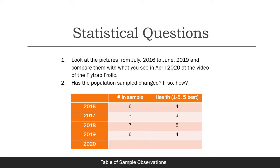There's a table that summarizes this data, giving the number of individuals in each sample and a qualitative observation about the health of those samples. How do you think the population changed from 2016 to 2019? Do you see a large variation or a lot of difference between individual samples and health? Or are they pretty close together, with only one or two individual differences?